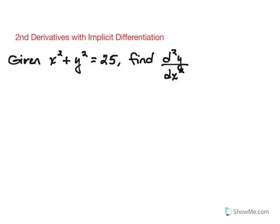Let's take a look at how to use implicit differentiation in order to find a second derivative. We're going to start out by using implicit differentiation as we typically would.